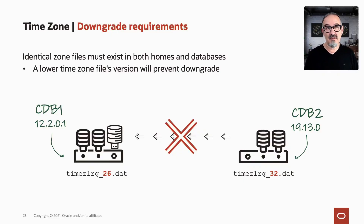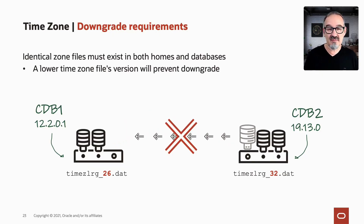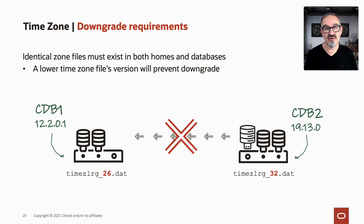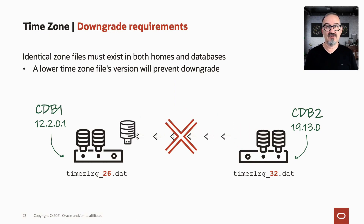The next key item to keep an eye on is time zone. In this example, we move from 12.2.0.1 to 19c. You can unplug your PDB and plug it in to upgrade it, but you can see that both homes have different time zone settings. The source has time zone 26 while the destination is time zone 32. Even if you created the CDB correctly with the right compatible setting, you can't go backwards — because time zone can't be reverted or downgraded.